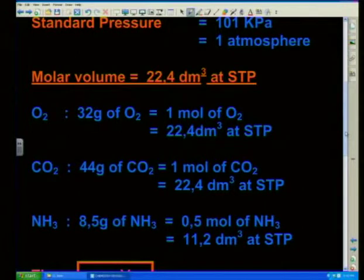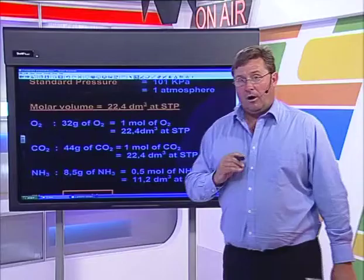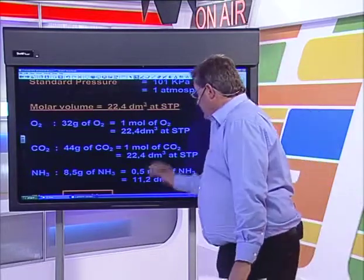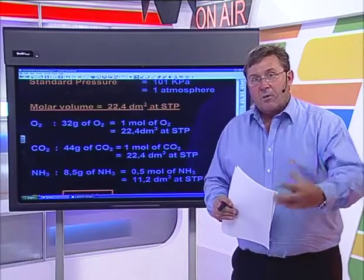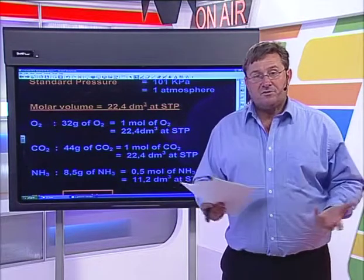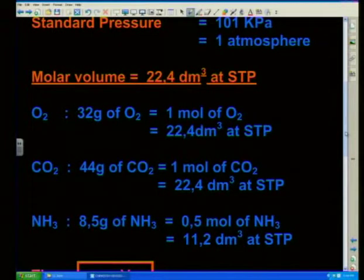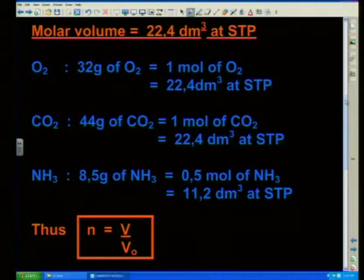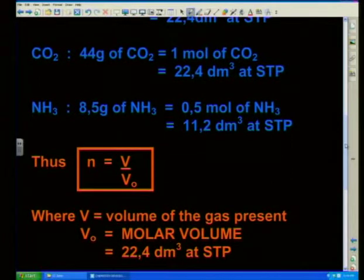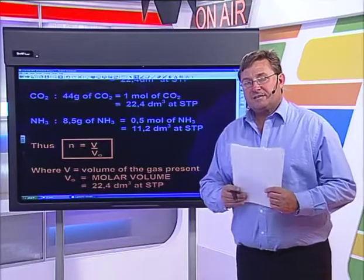Ammonia NH3 - eight and a half grams of ammonia is equal to half a mole of ammonia. If we're dealing with half a mole of gas, we're going to have half the molar volume - and what's half of 22.4? It's simply going to be 11.2 cubic decimetres at STP. That now gives us our molar volume equation, which is n equals V over V₀. V represents the volume of gas present, and V₀ represents the molar volume of 22.4 cubic decimetres at STP.